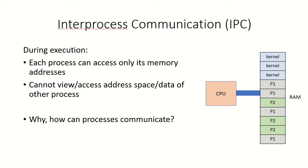We know that during execution, each process is allocated some memory space. So P1 would be given some memory, there would be some memory addresses allocated to P2, and each process can access only the memory addresses that have been allocated to it. There is no way in which a process can view or access the address space or data of any other process. But suppose if two processes want to communicate, then how will they do so?